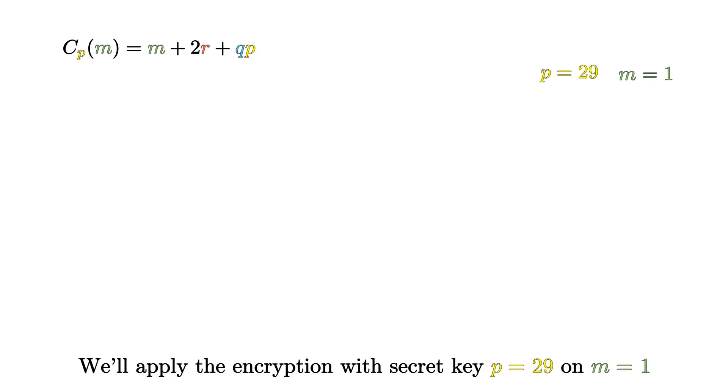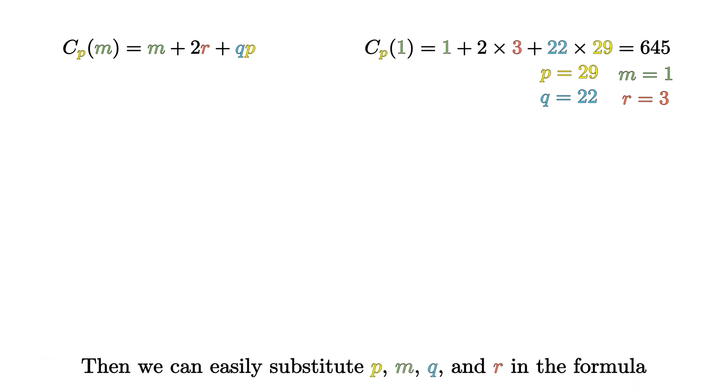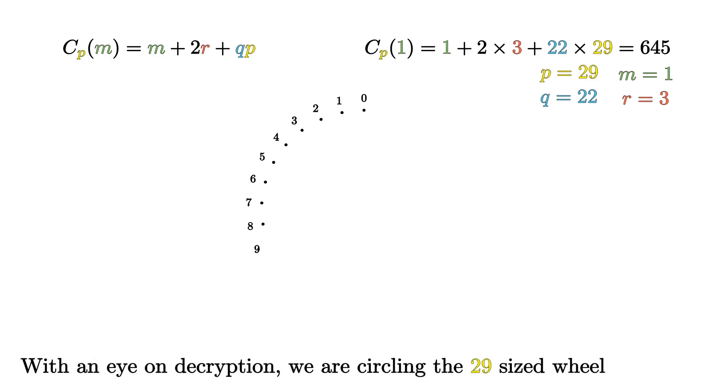Let's start with the encryption procedure. If we want to encrypt a generic message m, we first choose randomly both a small noise term r and also a large q. The encryption of m will simply be m plus 2r plus qp. So essentially, we are circling the p-size wheel q times and then adding an even value 2r. In the end, the parity of the point on the wheel on which we end up represents the message.